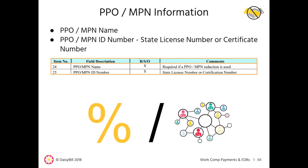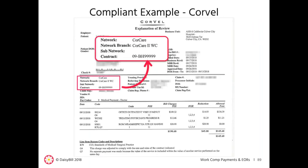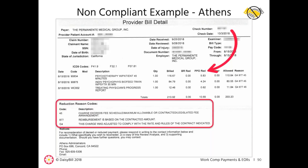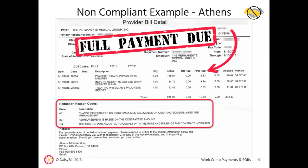If payment is reduced due to a PPO or MPN contract, the EOR must include the name of the PPO or MPN and the ID number — either the state license number or the certificate number. This is a compliant EOR example from Corvell, where the provider was reimbursed less than the OMFS due to a discount contract, and the EOR appropriately includes the network name, network branch, and contract number. In this non-compliant EOR, Athens applied a PPO reduction but fails to list the PPO contract name or PPO ID number. If a lien were filed, the provider would assert breach of duty and demand full payment of the billed amount.